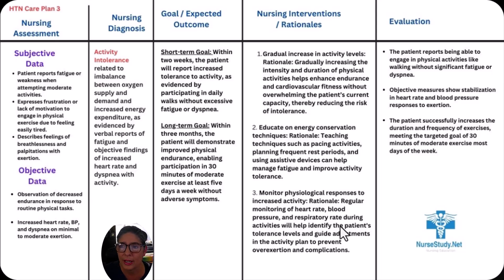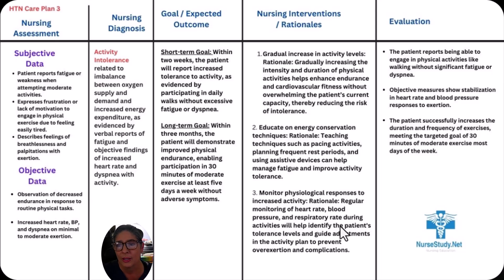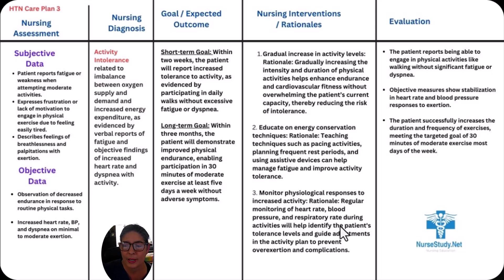Nursing interventions and rationale: First, gradual increase in activity levels — gradually increasing the intensity and duration of physical activities helps enhance endurance and cardiovascular fitness without overwhelming the patient's current capacity, thereby reducing the risk of intolerance. Second, educate on energy conservation techniques — teaching techniques such as pacing activities, planning frequent rest periods, and using assistive devices can help manage fatigue and improve activity tolerance. Third, monitor physiological responses to increased activity — regular monitoring of heart rate, blood pressure, and respiratory rate during activities will help identify the patient's tolerance level and guide adjustments to the activity plan to prevent overexertion or complications.